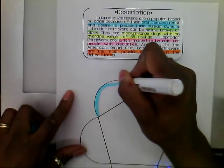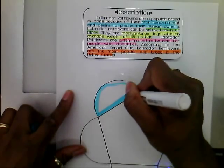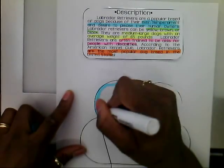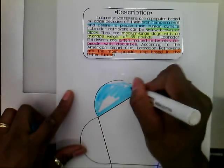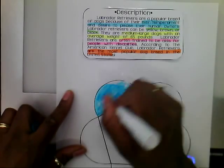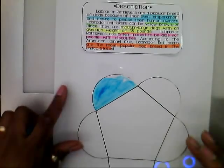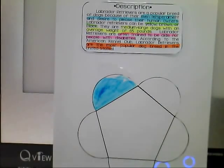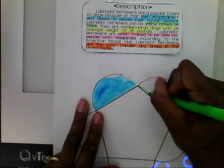I'm just going to come around like this. You could even color it all the way in if you want to. For the sake of time, I'm just going to highlight each of the other ones. The next one I'm going to outline with my green.